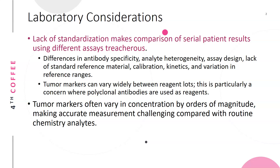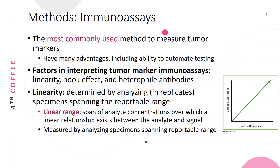There are differences in antibody specificity, analyte heterogeneity, and assay design, as well as a lack of standard reference material, calibration kinetics, and variation in reference ranges. Because tumor markers can vary widely between reagent lots — particularly a concern when using polyclonal antibodies — tumor markers often vary in concentration by orders of magnitude, making accurate measurement challenging compared with routine chemistry analytes.